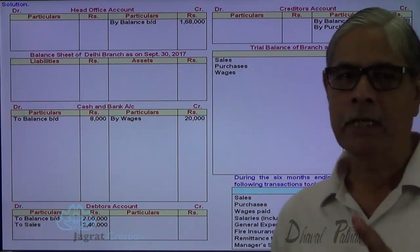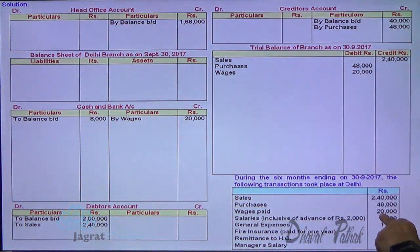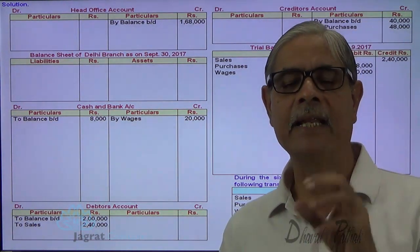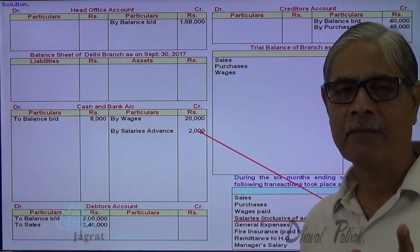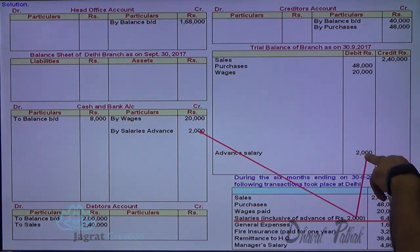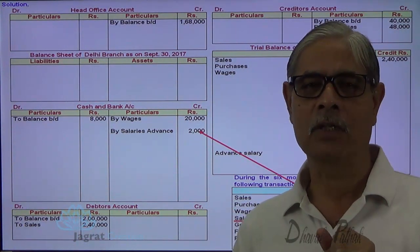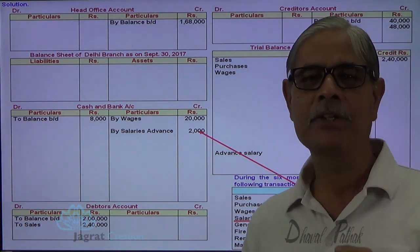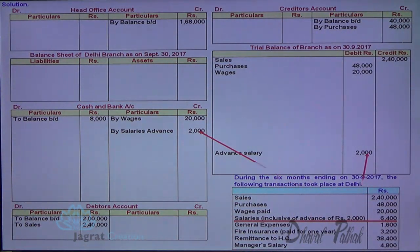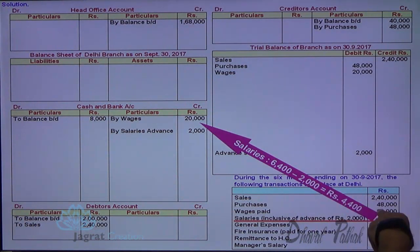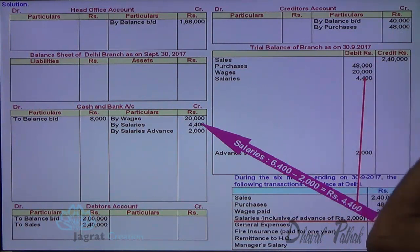Salary includes an advance of 2,000, with a total payment of 6,400. The advance salary paid is a balance sheet item, and 6,400 minus 2,000 gives 4,400 as the salary expense for six months. Advance salary of 2,000 is recorded in the trial balance as a debit; cash and bank account is credited. When preparing the trial balance, I record trading and profit and loss account items in the upper part, and balance sheet items in the lower part. The salary expense of 4,400 appears in the trial balance; advance salary will appear in the balance sheet.